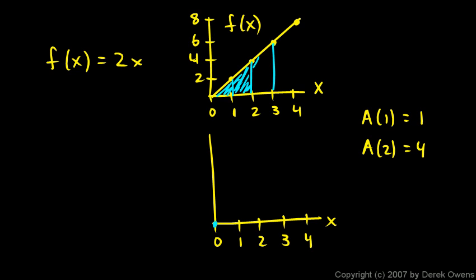Let's go to 3. Now the total accumulated area is given by this triangle here. And that's going to be 1 half of 3 times 6. So that's 9. A of 3 is 9. And then by the time we get to 4, we've enclosed all of this area, which would be 1 half of 4 times 8. And that would be 16.